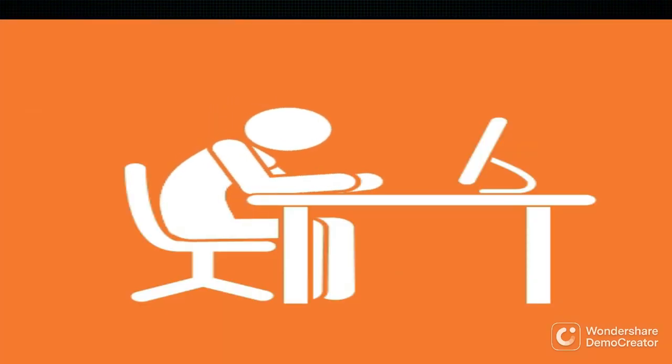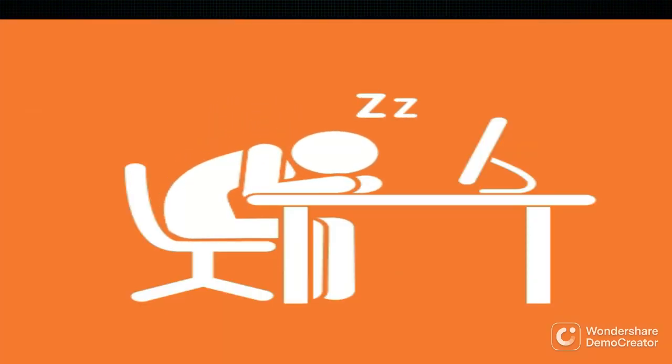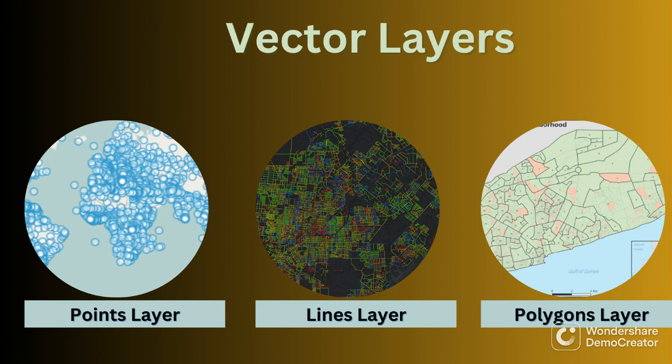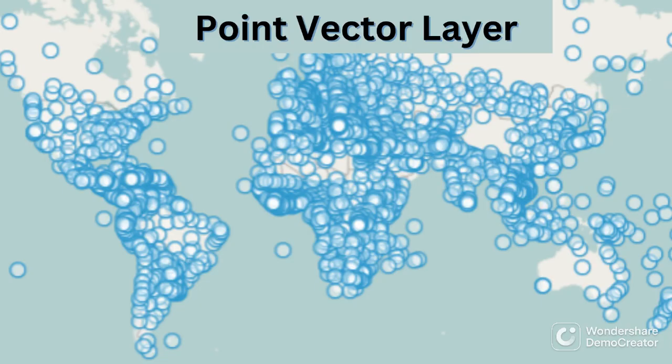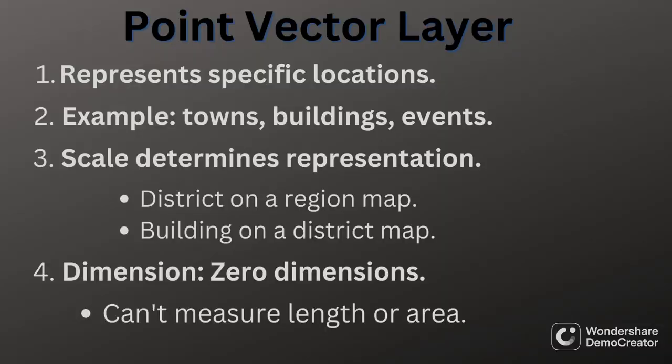Before we start with the actual code, it is essential to understand what vector layers are. Simply put, vector layers represent real-world features as points, lines or polygons in a digital format. Points are used to represent specific locations such as towns, buildings, events, etc.